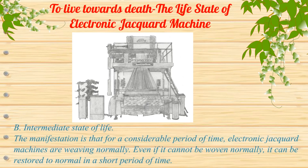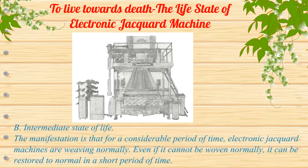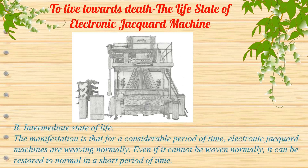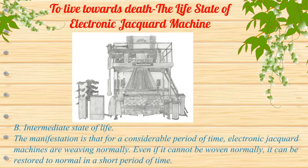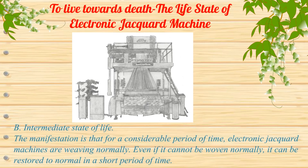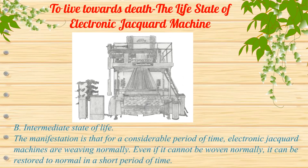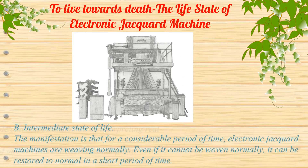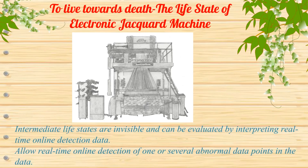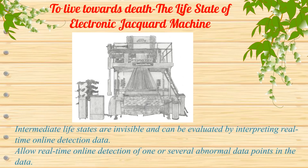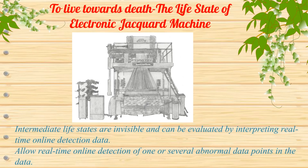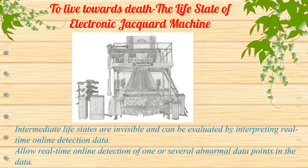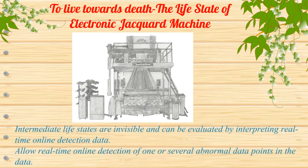B: Intermediate state of life. The manifestation is that for a considerable period of time, electronic jacquard machines are weaving normally. Even if they cannot weave normally, they can be restored to normal in a short period of time. Intermediate life states are invisible and can be evaluated by interpreting real-time online detection data, allowing one or several abnormal data points within the detection data.